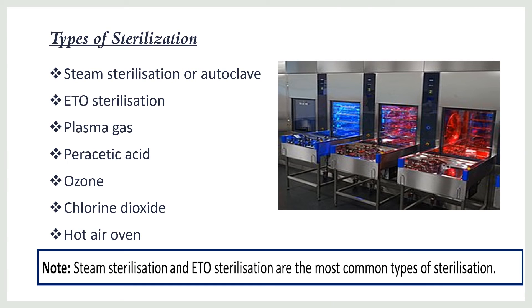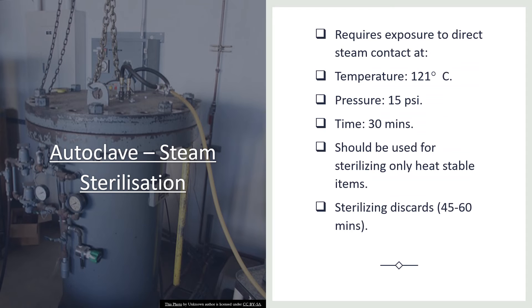Types of sterilization include steam sterilization or autoclave sterilization, ethylene oxide (ETO) sterilization, plasma gas, peracetic acid, ozone, chlorine dioxide, and hot air. Steam sterilization and ETO are the most common. Steam sterilization requires exposure to direct steam contact, temperature of over 121 degrees Celsius, pressure of over 15 pounds per square inch, and timing of 30 minutes. It should be used only for heat-stable items.